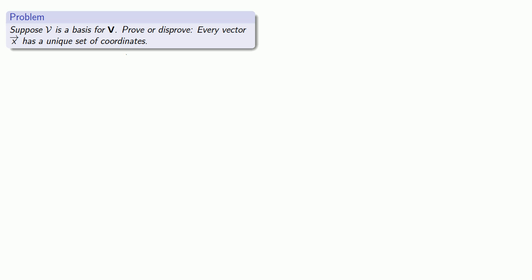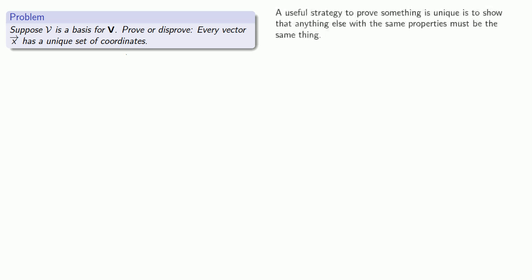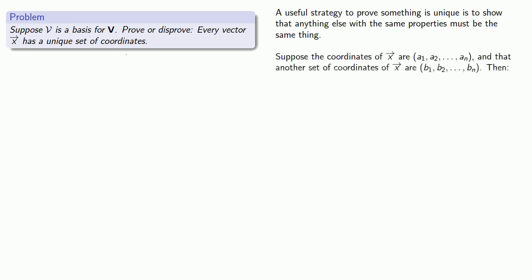A useful proof strategy: if you want to show that something is unique, show that anything else with the same properties has to be the same thing. Suppose the coordinates for x are a1 through an, and another set of coordinates for x are b1 through bn. The coordinates are the coefficients of the linear combination that give us the vector, so using the a's or the b's should give us the same vector. Rearranging gives a linear combination of the v vectors.